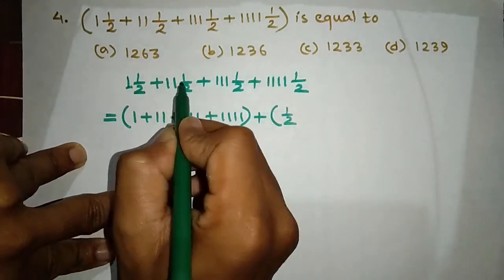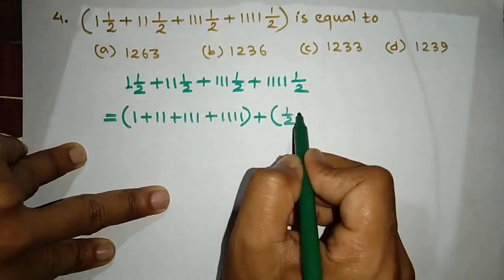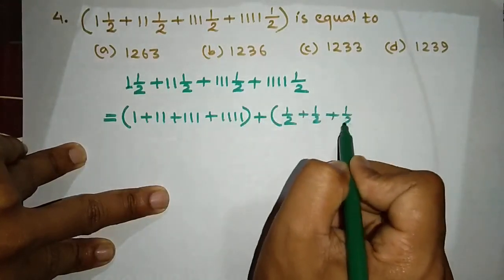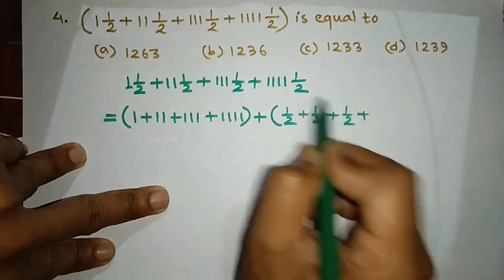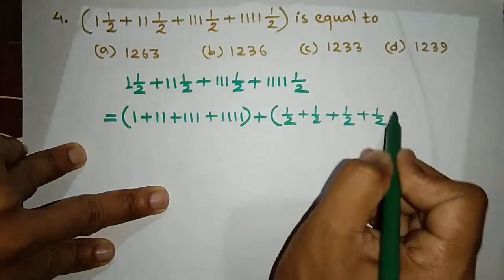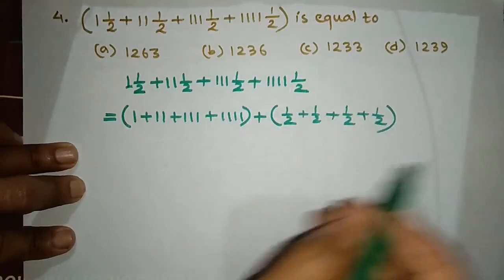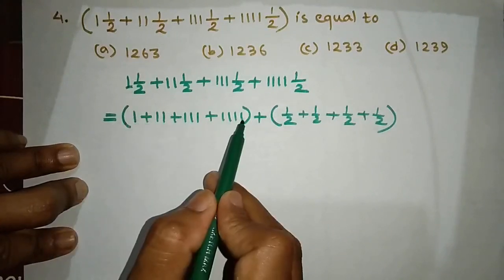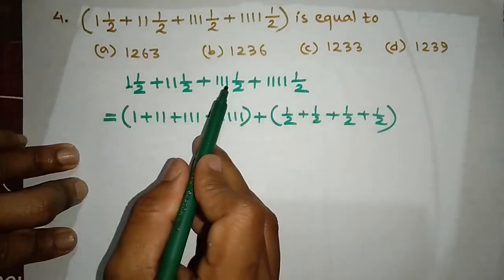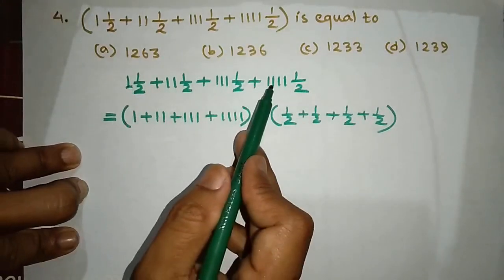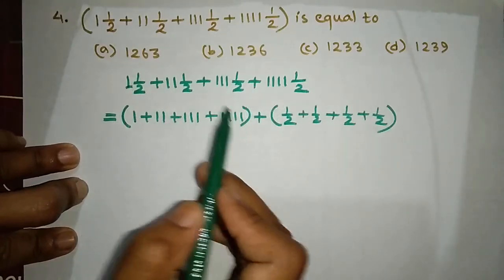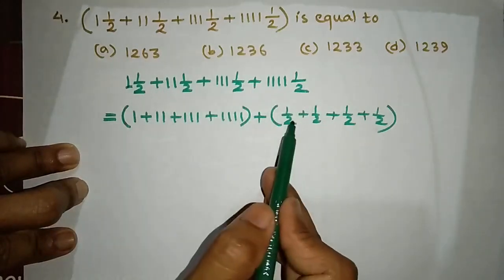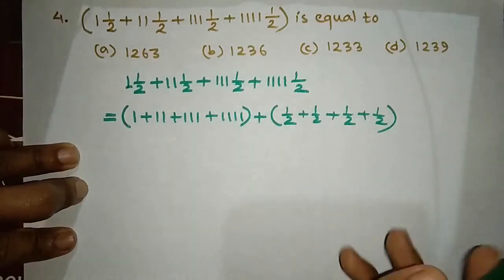One by two, plus one by two, plus one by two, plus one by two — the total is now called four halves. So that gives us: one, eleven, one hundred eleven, one thousand one hundred eleven, and so on. As a result, one by two added repeatedly gives us the total.